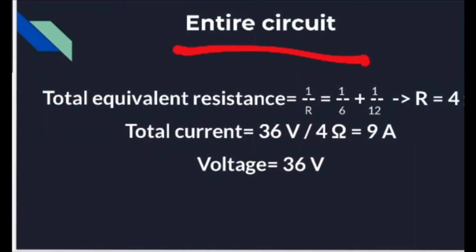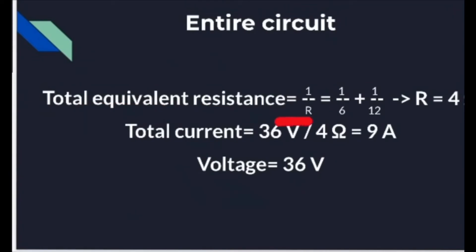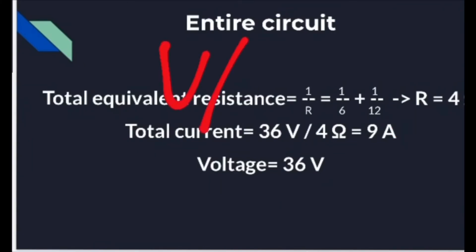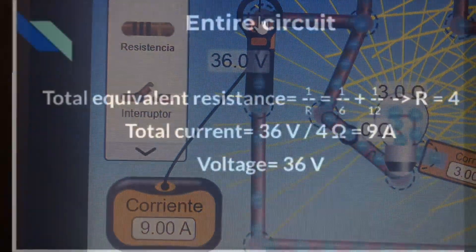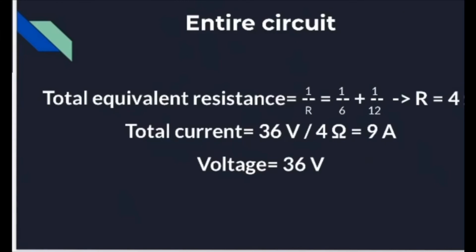For the entire circuit, to get the total equivalent resistance we use a formula similar to the parallel formula: adding 1 divided by the first equivalent resistance plus 1 divided by the second equivalent resistance, giving a total equivalent resistance of 4 ohms. Dividing the voltage by this gives a total current of 9 amperes, which matches our calculations. The voltage of the entire circuit is 36 volts.